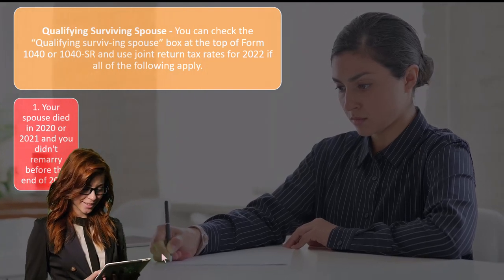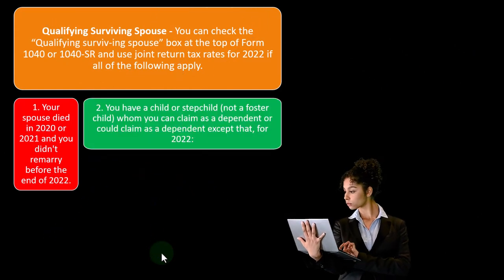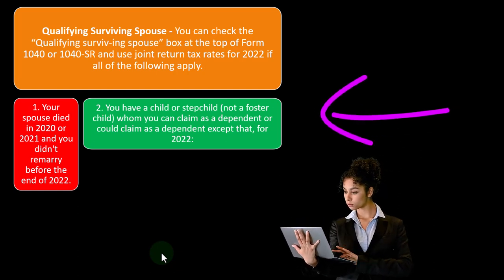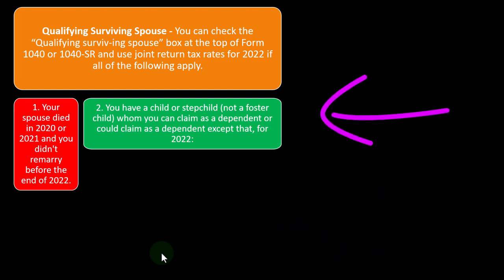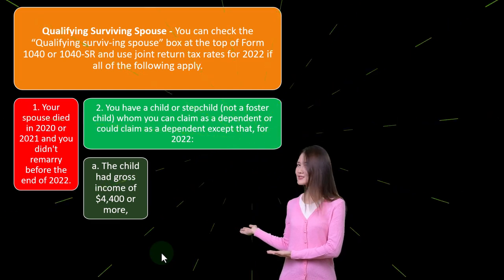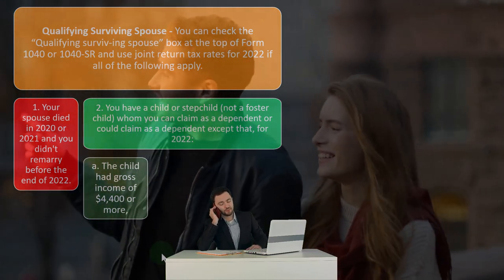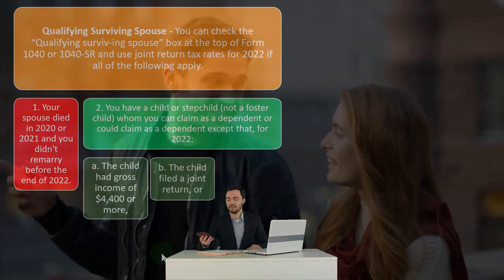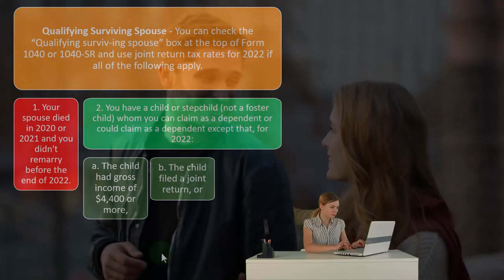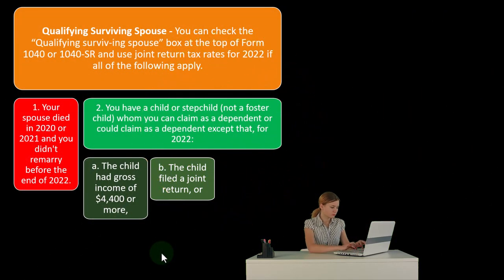Requirements for qualifying surviving spouse: number one, your spouse died in 2020 or 2021 and you didn't remarry before the end of 2022. Number two, you have a child or stepchild (not a foster child) whom you can claim as a dependent — or could claim as a dependent except that for 2022, (A) the child has gross income of $4,400 or more, or (B) the child filed a joint return because they married, so they wouldn't be a dependent on your return but could still allow you to qualify for qualifying surviving spouse status.